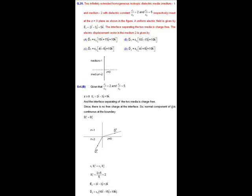MCQ question number 20. Given that two infinitely extended homogeneous isotropic media of dielectric constant Epsilon R1 equals 2 and Epsilon R2 equals 5 respectively, both media separating at Z equals 0 as shown in figure and that boundary is charge-free. A uniform electric field is given by E1 vector equals 2 I cap minus 3 J cap plus 5 K cap in first media. In this question, we have to find out the electric displacement vector D vector in medium 2.